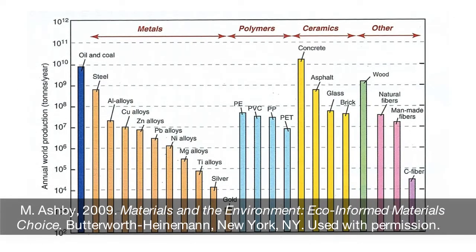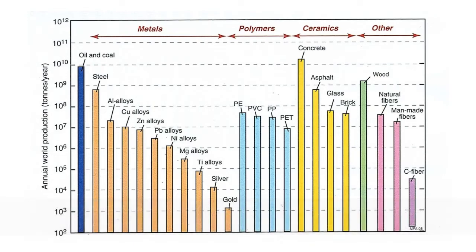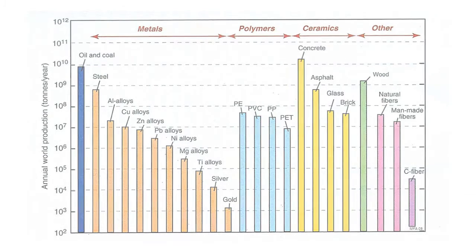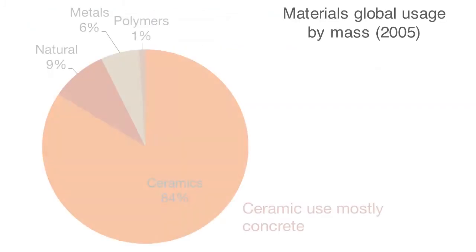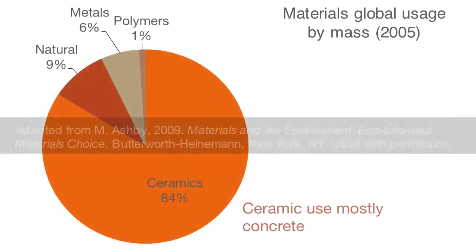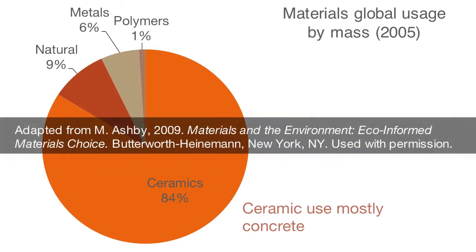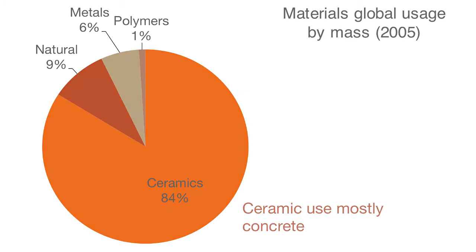This graphic shows the production of 23 materials that are the basis of an industrial society's way of life. Here's another look at the same set of materials — shown by mass, most of the materials are ceramics, with the greatest proportion being cement.